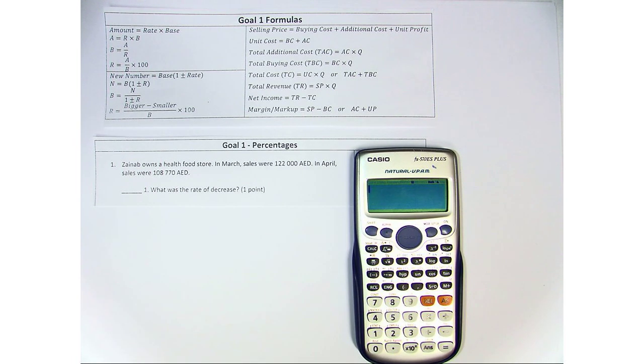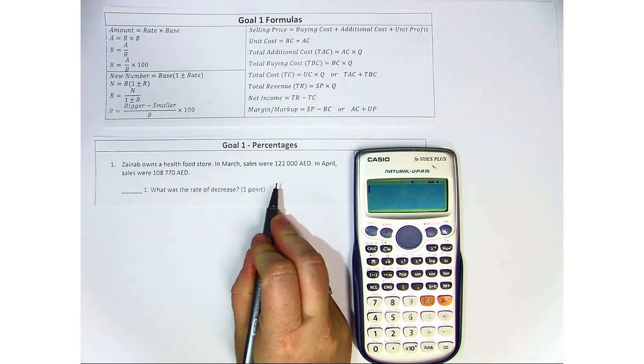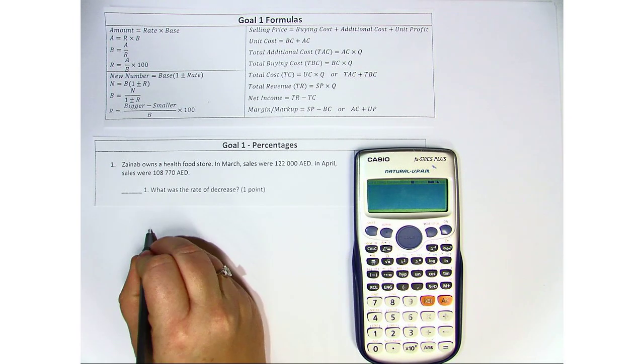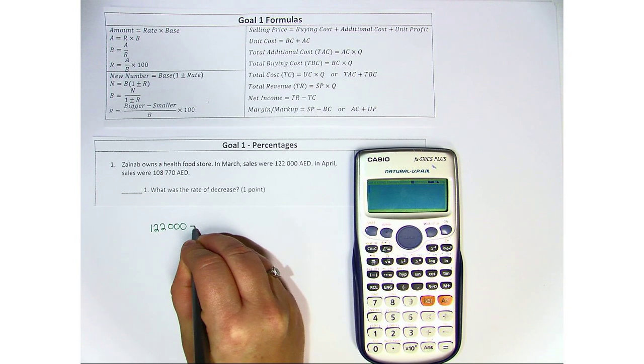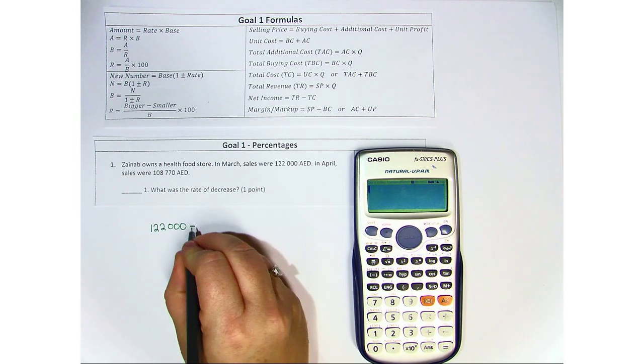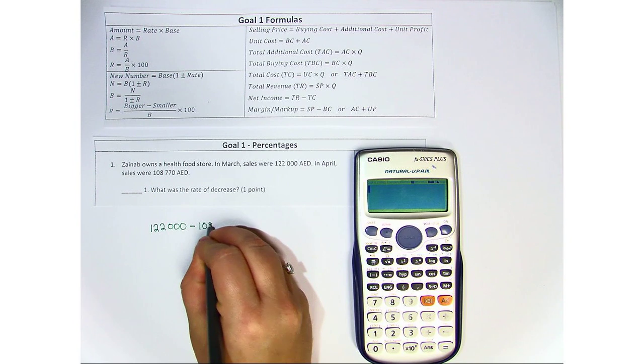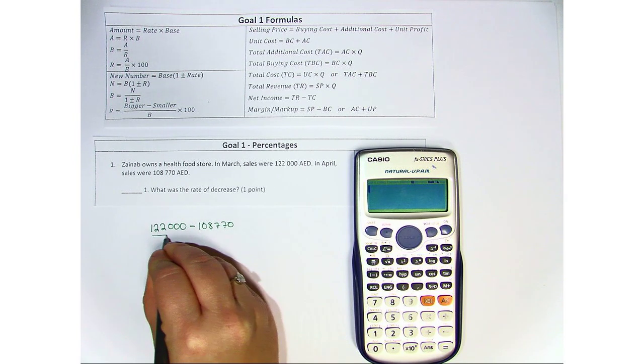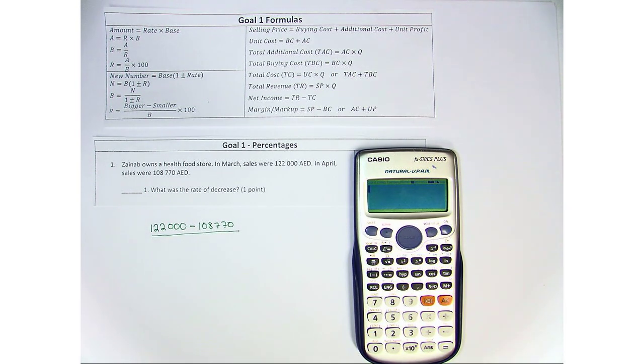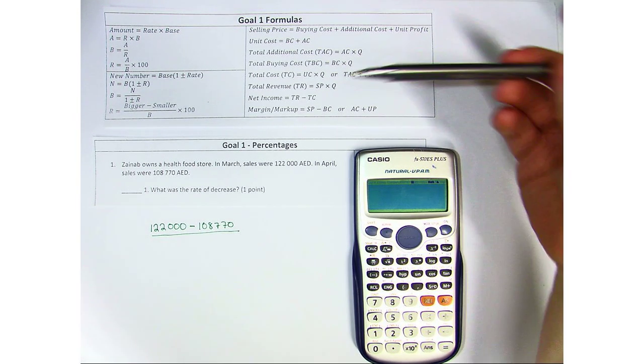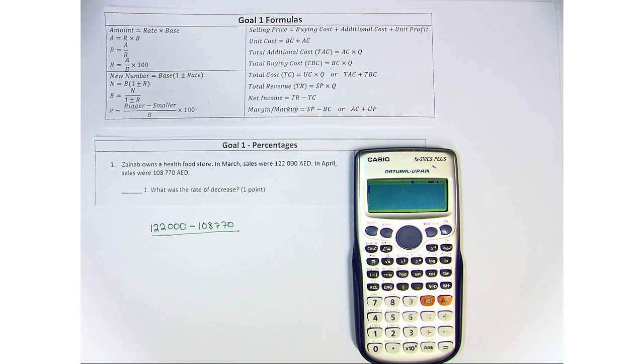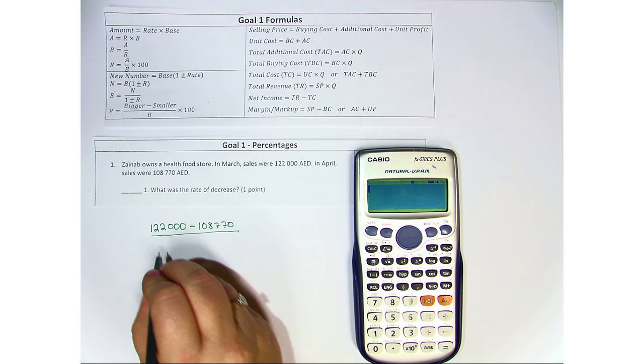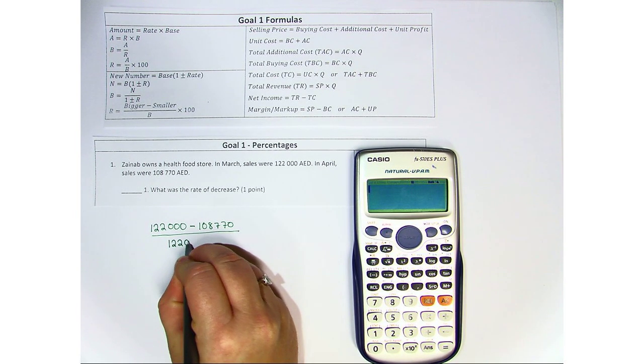So let's go ahead and look at this. The bigger number is 122,000. So I'm going to take 122,000 and subtract the smaller number, 108,770. Now, we divide this by the original number. Here we have March sales and April sales. The number that comes first is considered the original. So we're going to divide this by 122,000.